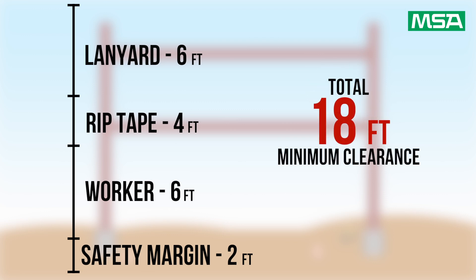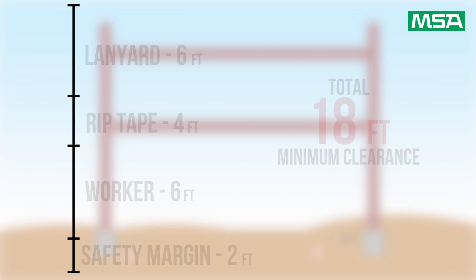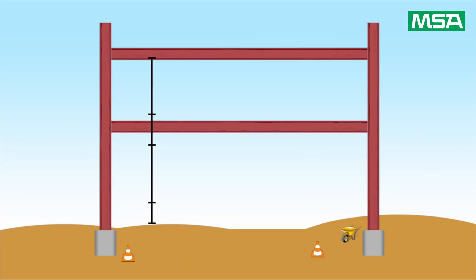This gives us a total of 18 feet minimum clearance from the anchor point needed to ensure Bob's safety. Keep in mind we didn't include anchorage connectors, and any of these numbers could change for a variety of reasons. Bob's scenario is just a generalization.